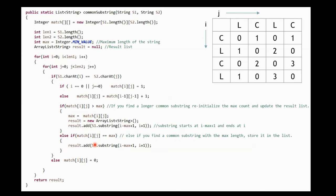Also, if the count we update in match[i][j] is equal to max, we just add that substring to the result set. That's the complete algorithm. Thank you, and please let me know if you have any comments, questions, or concerns.